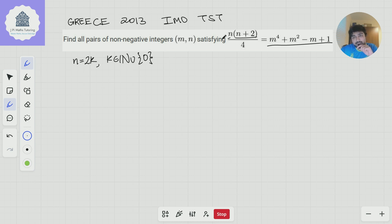And if I just replace that and simplify this, I get k^2 + k = m^4 + m^2 - m + 1.